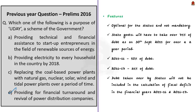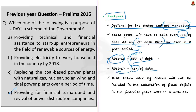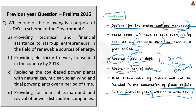Using this as an opportunity, let us know a few more facts about the UDAY scheme. This scheme is optional for the states — not mandatory. Under the scheme, the state government will have to take over 75% of the debt of the power distribution companies as on 30th September 2015 over a two-year period: 50% of debt in 2015–16 and 25% in 2016–17. Importantly, the debt taken over by the state as per the UDAY scheme will not be included in the calculation of fiscal deficit of respective states in 2015–16 and 2016–17.